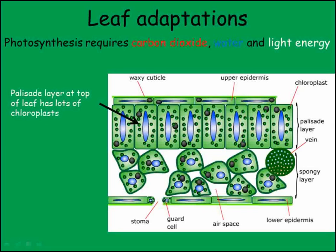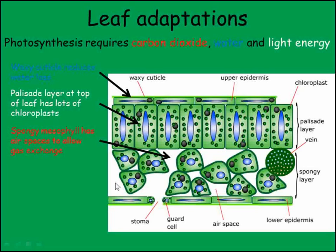We can see that there are more chloroplasts in the layer of cells towards the top of the leaf. These cells are called palisade cells and are packed tightly together without spaces so that as many as possible fit into the leaf. Above them is a waxy cuticle, which is waterproof, to prevent the leaf losing too much water. Below the palisade layer is a layer of cells with gaps between them — this is the spongy mesophyll layer, and the gaps between cells allow gases to move between the palisade layer and the underside of the leaf easily by diffusion.